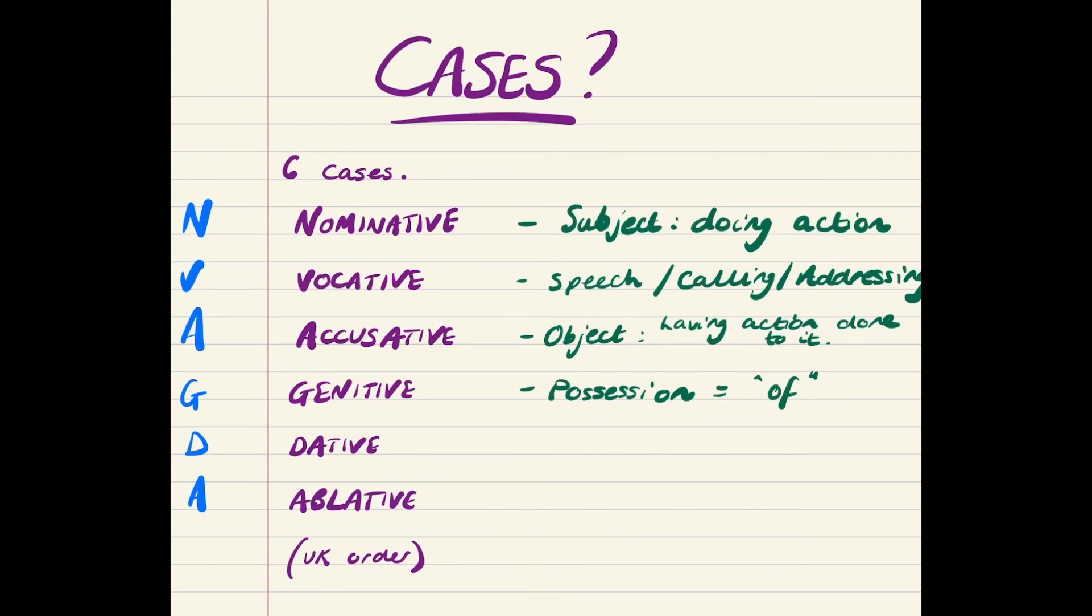Then you have your genitive, which is the case that is used to show possession. So, the dog's bone, the bone of the dog, the of the dog would be in the genitive. The thing doing the possessing is in the genitive. So, you can translate it in English with an apostrophe, the dog's bone. I will put up a video about the usage of apostrophes to show possession in English, so that you can check your knowledge of that too, just in case you need a helping hand.